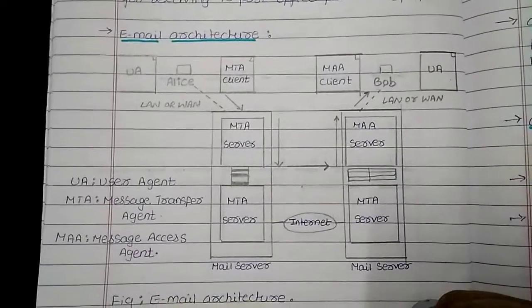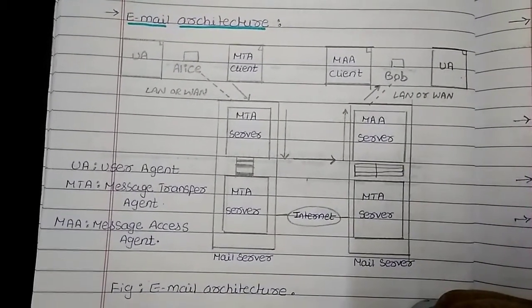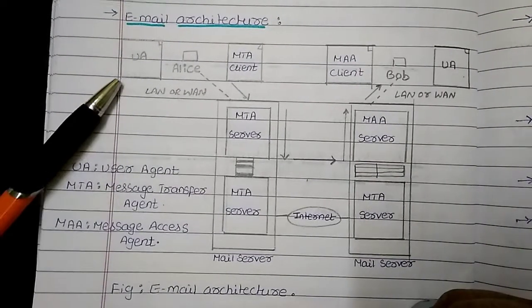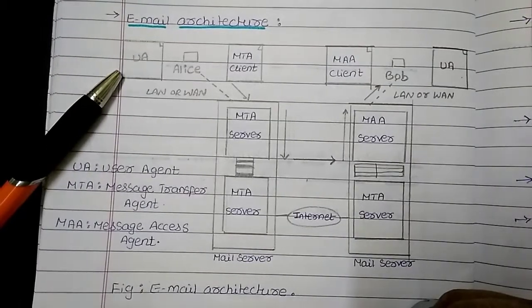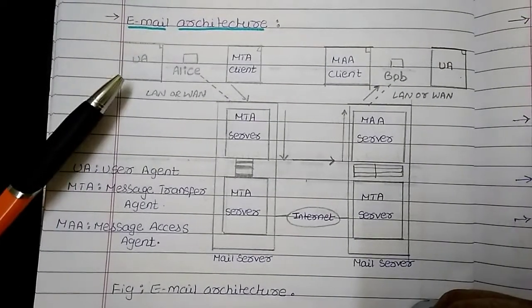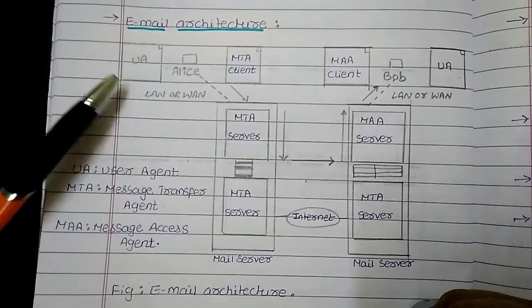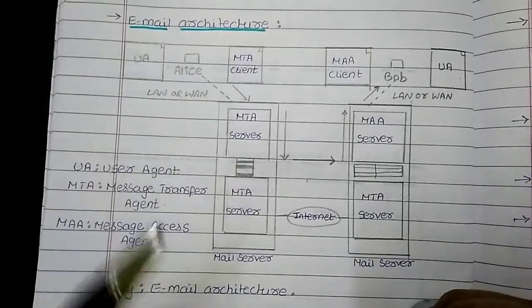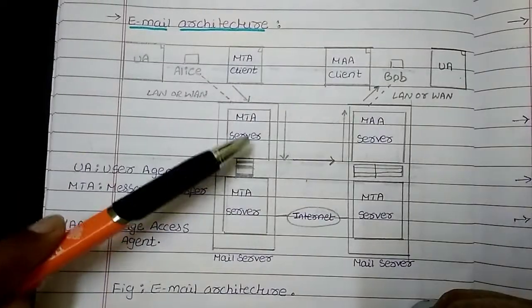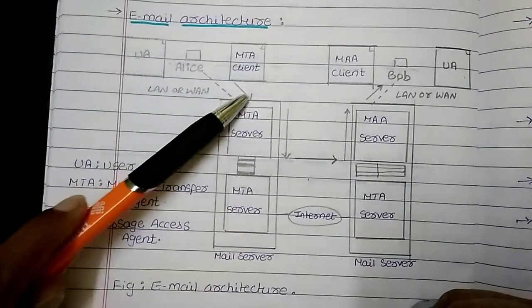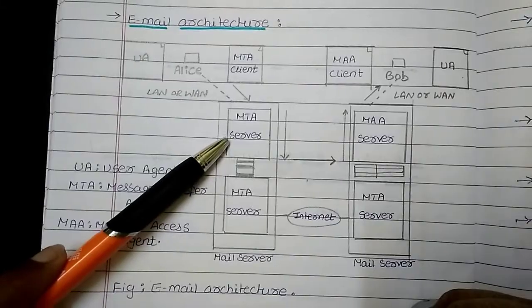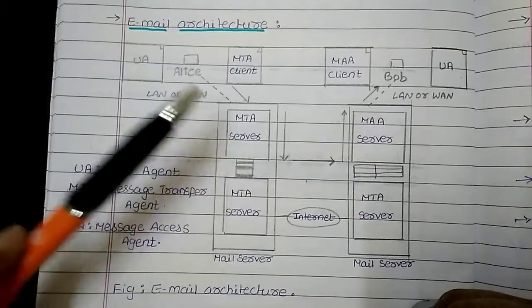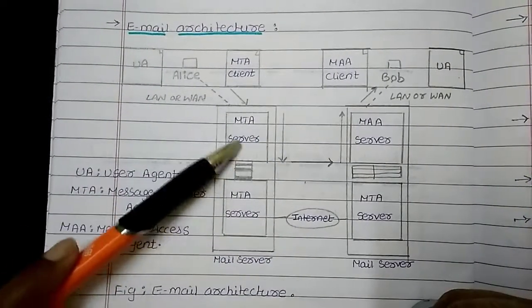Now we will see the simple email architecture which is most commonly used. The components used in the email architecture are: first, the User Agent — it is a software program which composes, reads, replies, and forwards messages, and is also responsible for handling the entire mailbox. Then comes the Message Transfer Agent, or MTA. MTA can be either a client or server, and the actual mail transfer is done through the MTA.